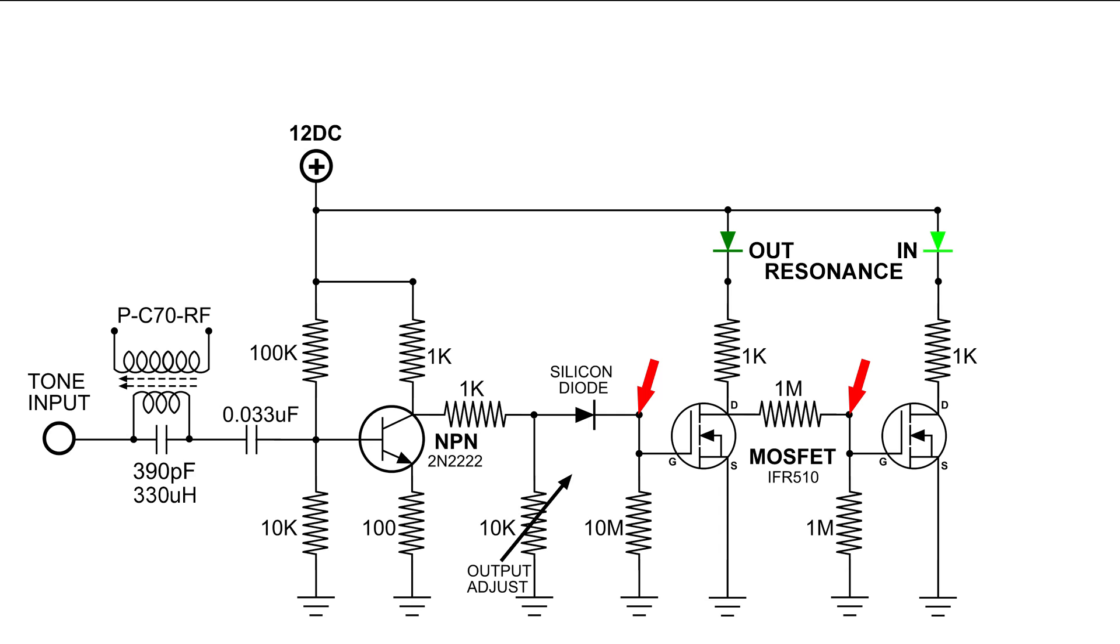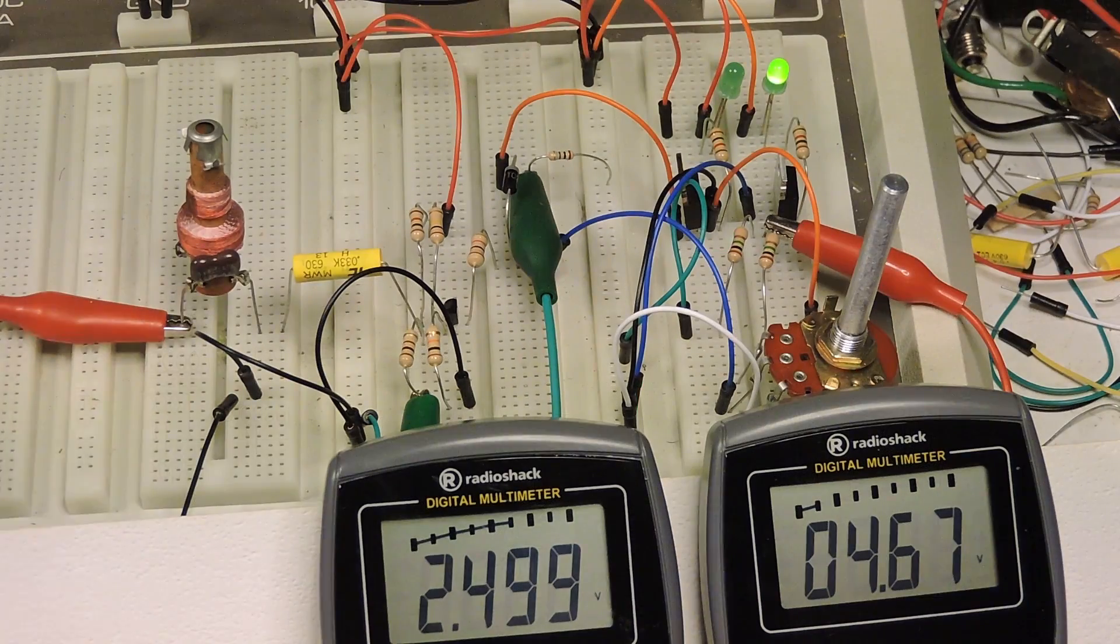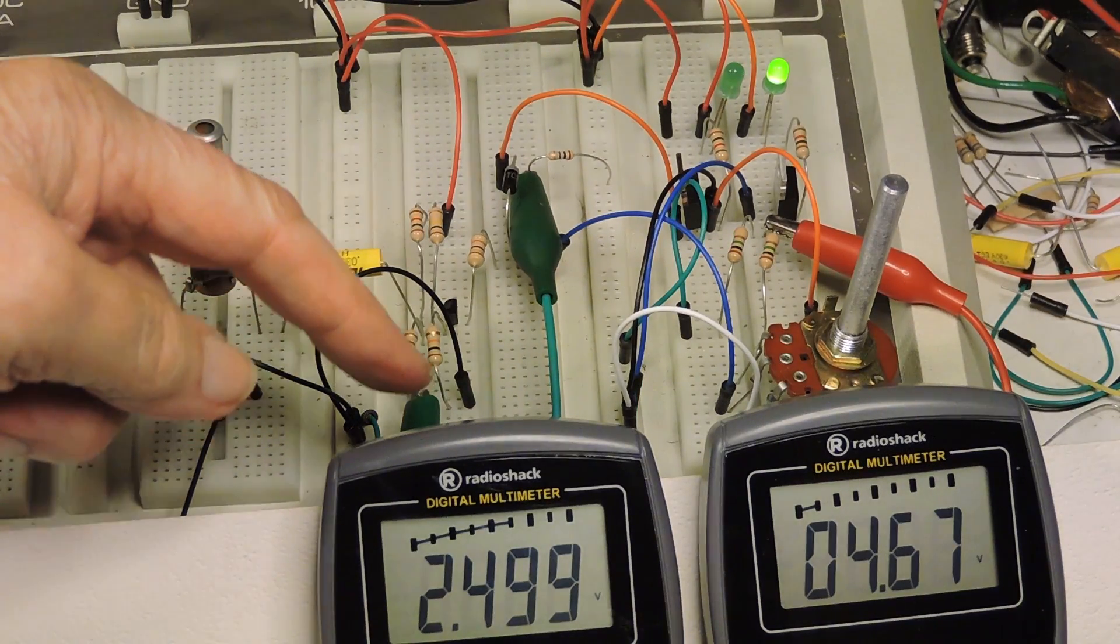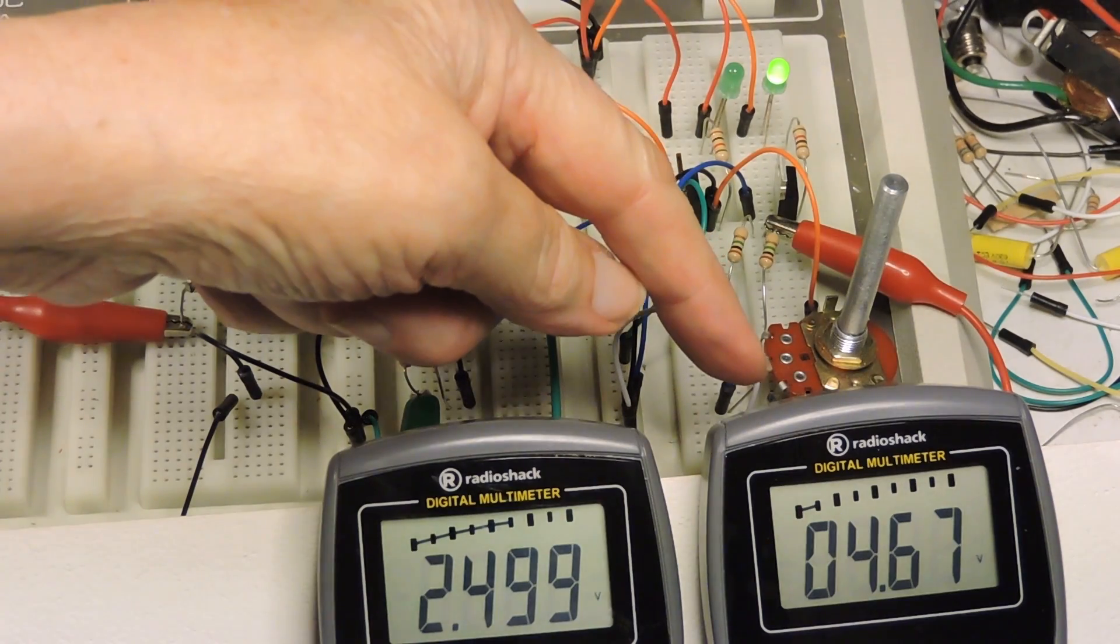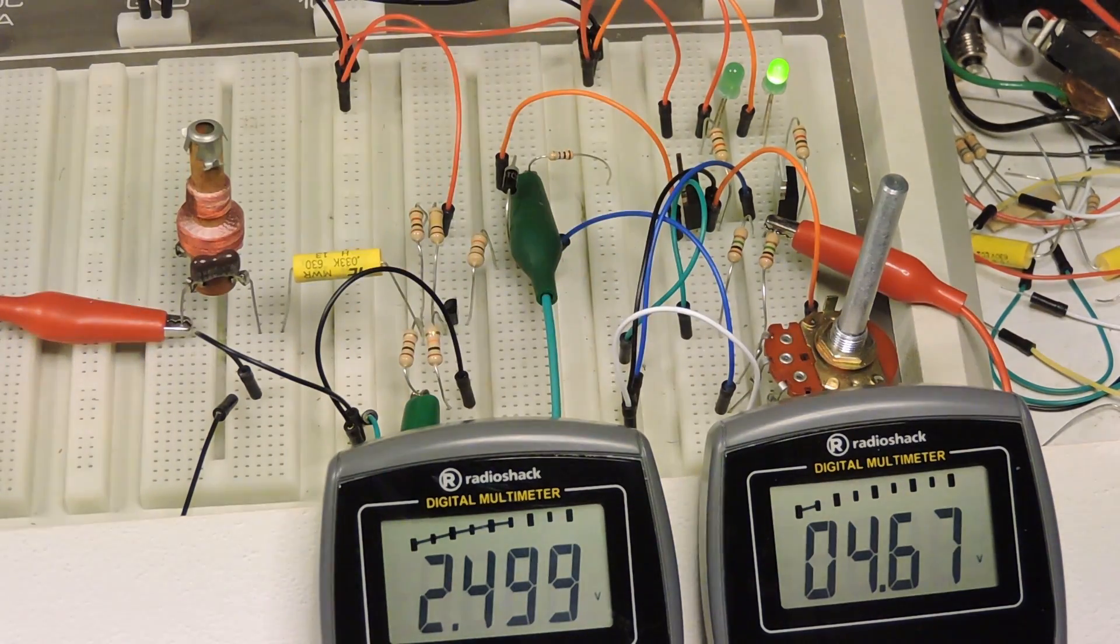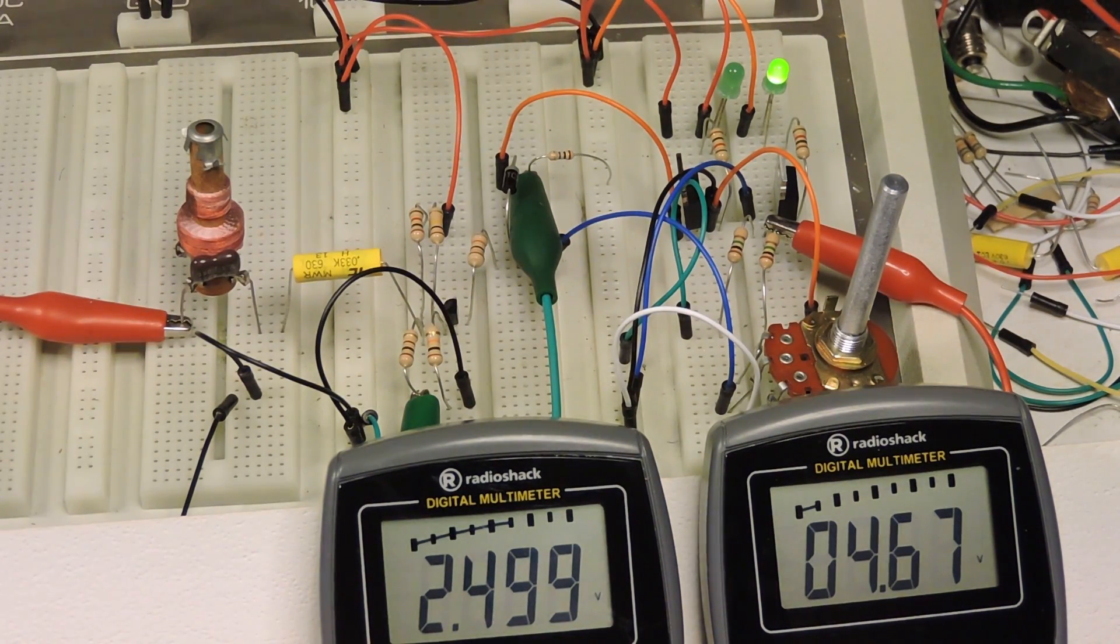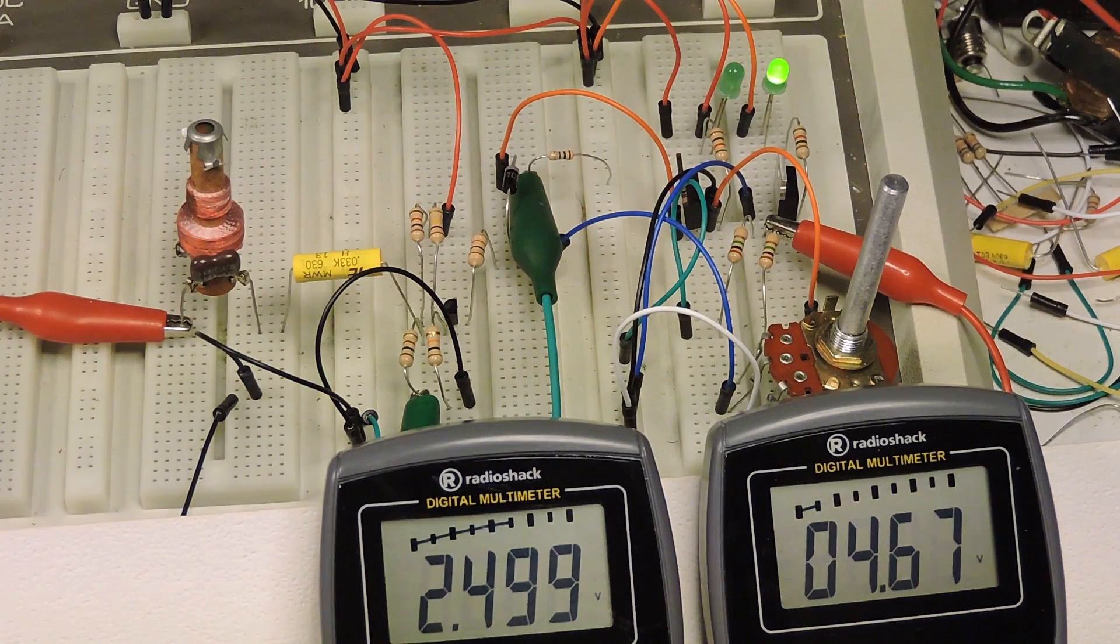Now I'm going to put two digital meters at the gates of both MOSFETs. I've got this meter on the gate of the first MOSFET, and I've got this meter on the gate of the second MOSFET. As you can see, the circuit is in resonance.